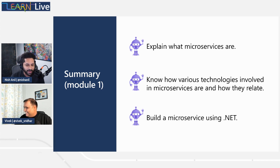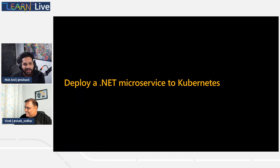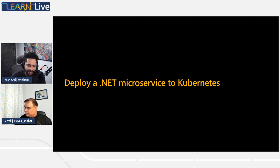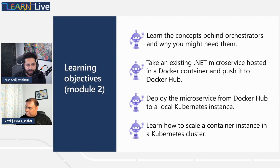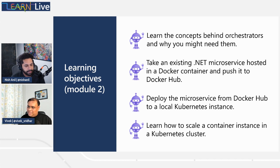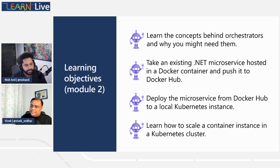Now we need to think about deploying your .NET application into a more production-like scenario — probably Kubernetes. In this module, we'll cover a couple of things: briefly understand the complex orchestrator, build the .NET app and push it to Docker Hub as a registry, deploy the application on Kubernetes, and look at important Kubernetes concepts like scale and resilience.